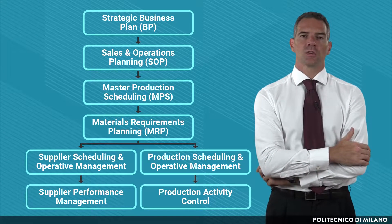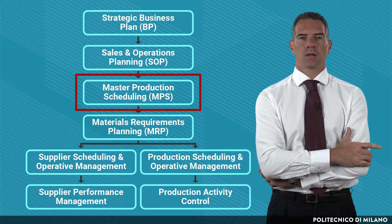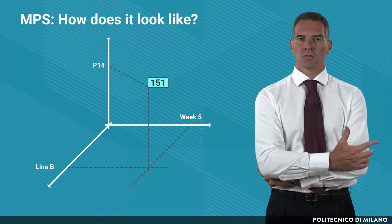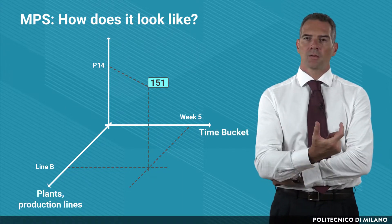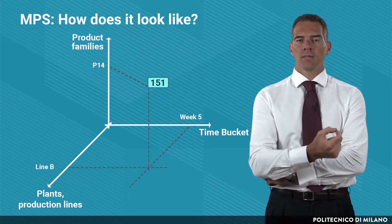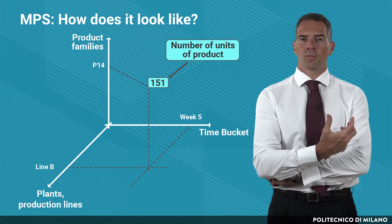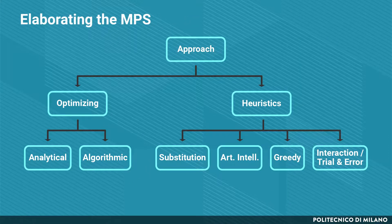In the previous lectures we have been introducing the topic of the master production schedule, a key phase in the whole production planning cycle. From a practical point of view, the master production schedule is a multi-dimensional space in which, depending on the plan or production line, on the time bucket to be considered, and on the production family, a given quantity to be produced has to be defined. This is a very complex problem which cannot be done manually, and so several methods have been developed in literature, in operational research, applied mathematics, and computer science in order to deal with this problem.